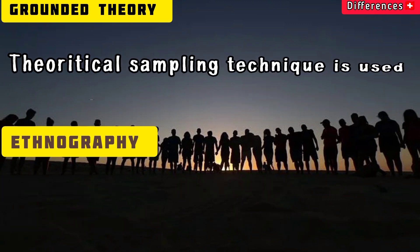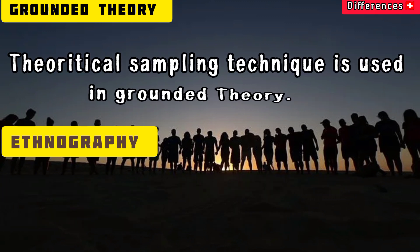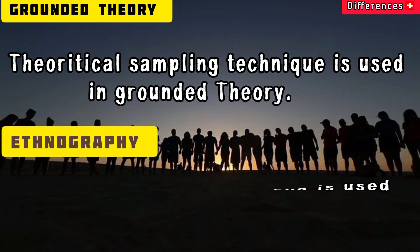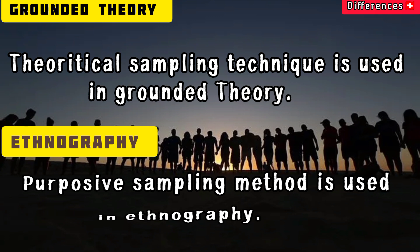Theoretical sampling technique is used in grounded theory, while purposive sampling method is used in ethnography.